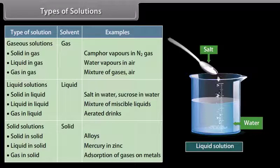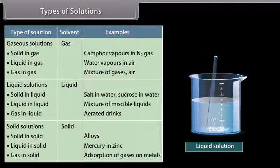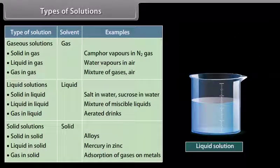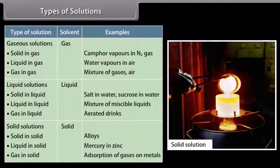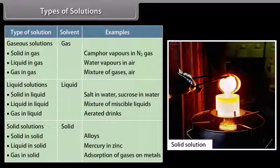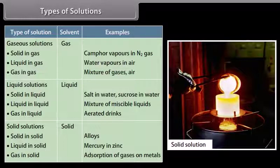Liquid in gas — for example, water vapors in air. Gas in gas — for example, mixture of gases or air. In liquid solutions, liquid is the solvent. Categories include: solid in liquid, e.g., salt in water or sucrose in water; liquid in liquid, e.g., mixture of miscible liquids; gas in liquid, e.g., aerated drinks. In solid solutions, solid is the solvent. Categories include: solid in solid, e.g., alloys; liquid in solid, e.g., mercury in zinc; gas in solid, e.g., adsorption of gases on metals.